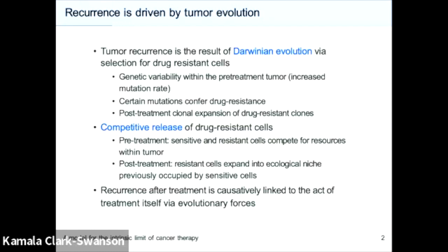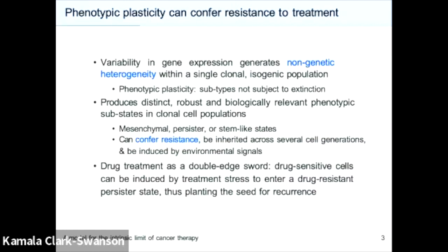Taken together, these views give us an understanding that the act of treatment itself is causatively linked to the recurrence we see when treatment fails. This understanding has in part motivated the development of things like adaptive therapy, which we've heard a lot about over the past couple of days. What I'm going to talk about is a more recent addition to the picture of eco-evolutionary dynamics of cancer treatment that complicates the classical Darwinian paradigm: non-genetic acquisition of resistance.